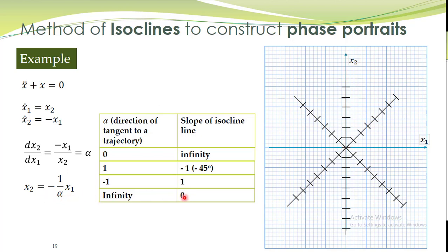You can take any values of alpha, and corresponding to that particular value of alpha, you plot the isoclines. For alpha equal to infinity, this line has slope equal to 0, so it is a line on the horizontal axis. On this isocline, the tangent to the trajectories will be infinity. So we have now drawn some isoclines on this phase plane.